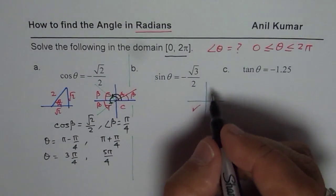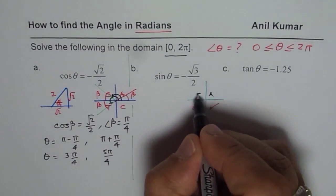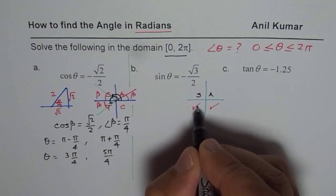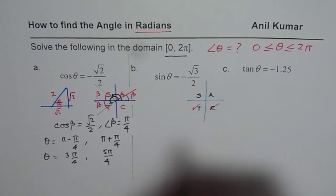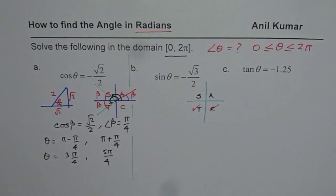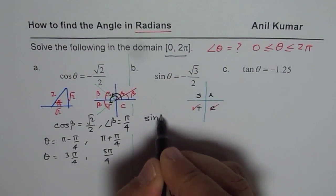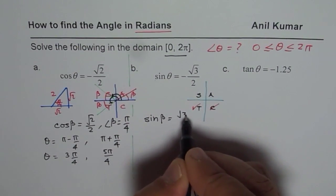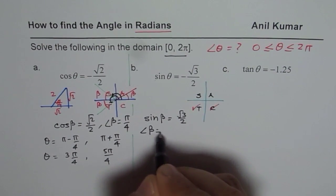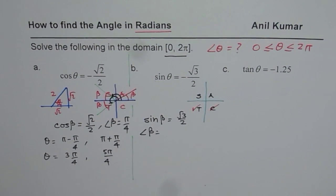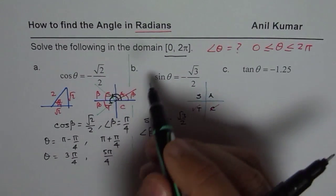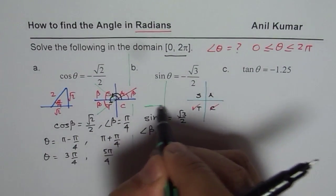Since all are positive here, sine is positive here, tan is positive in 3, cosine in 4. So as we did, we will find the acute angle. Sin β = √3/2. And we know angle β which will give us this value from our special triangles.